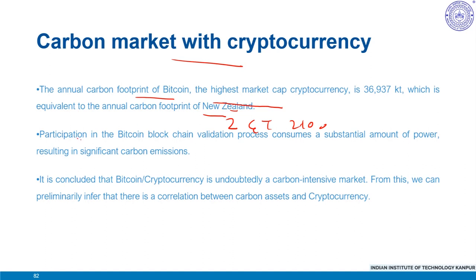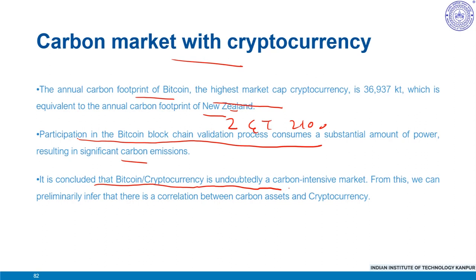Participation in the Bitcoin blockchain validation process consumes a substantial amount of power, resulting in significant carbon emissions. It is concluded that Bitcoin and cryptocurrency in general is undoubtedly a carbon-intensive market, and from this we can firmly infer that there is a correlation between carbon assets and cryptocurrency. Hence, the huge energy consumption and carbon emissions generated by Bitcoin and other cryptocurrency mining may become an obstacle on the road to worldwide emission reduction and sustainable development goals.